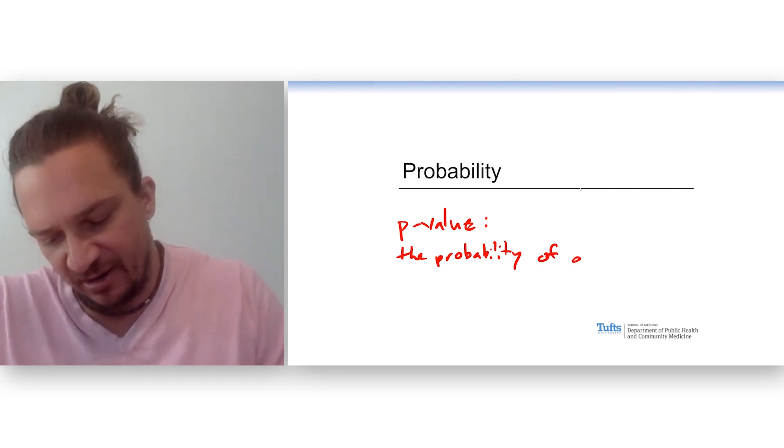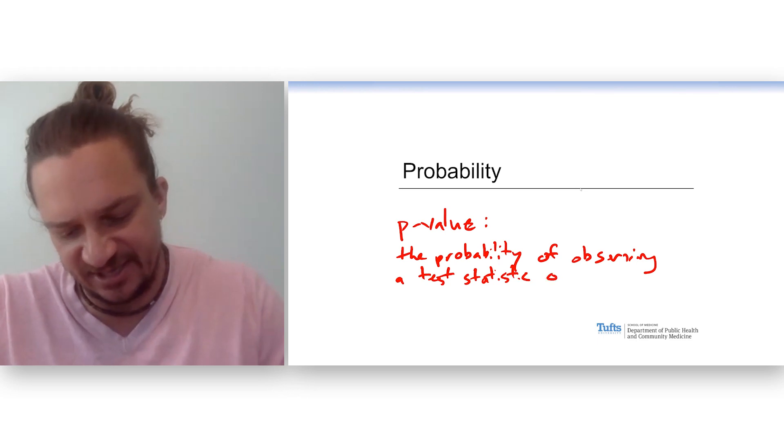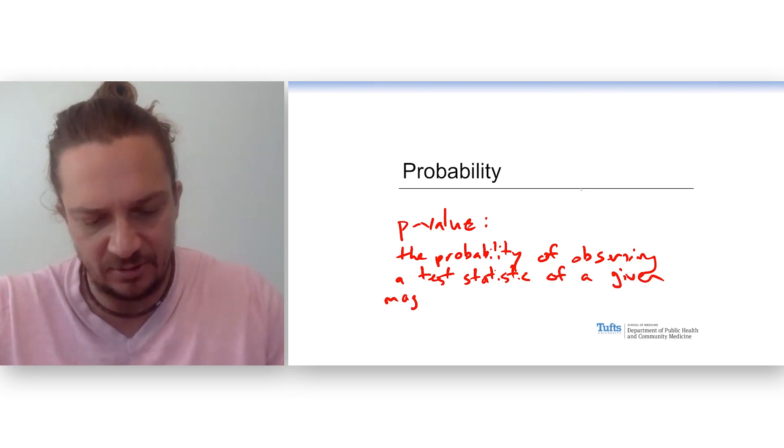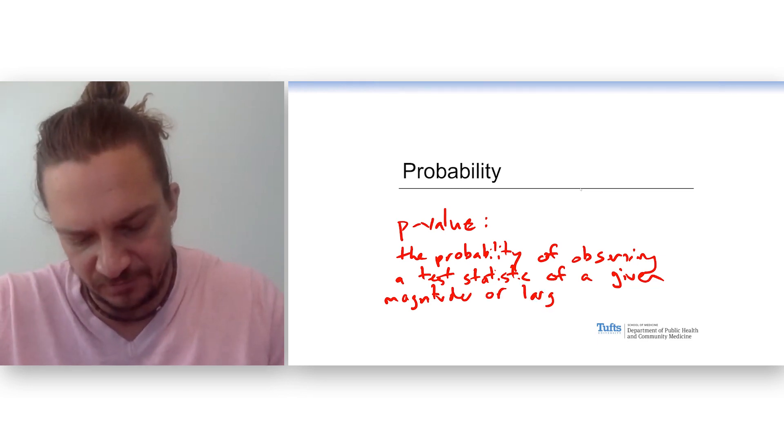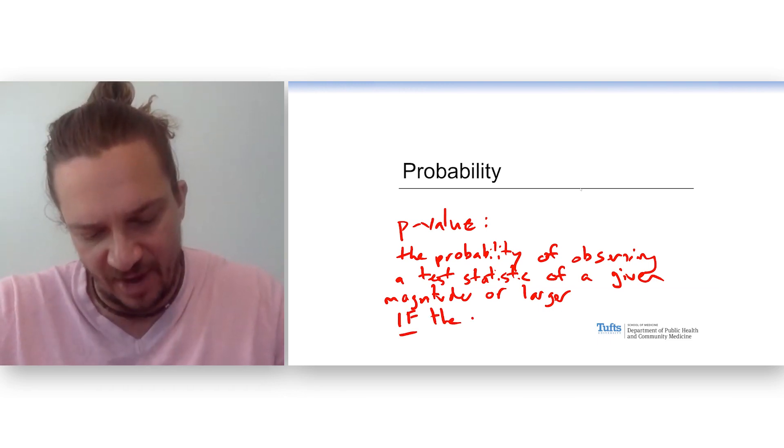The probability of observing a test statistic. This might sound like gibberish now. A test statistic of a given magnitude or larger if the null hypothesis is true.